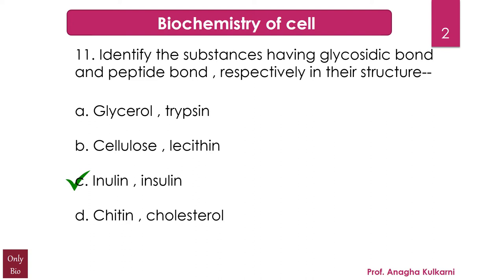Then there is inulin. Inulins are a group of naturally occurring polysaccharides produced by many types of plants, belonging to the class of dietary fibers known as fructans. They are used by some plants as a means of storing energy, typically found in roots or rhizomes — a heterogeneous collection of fructose polymers. Insulin, we know, is a peptide hormone.